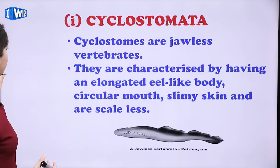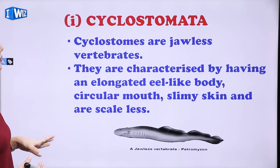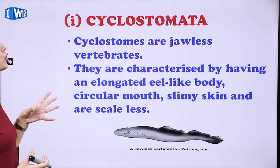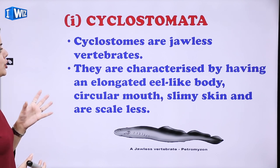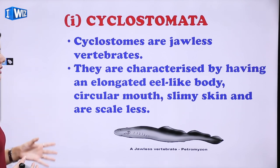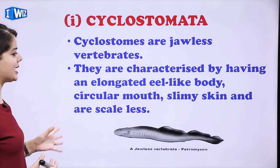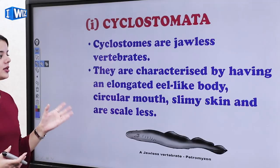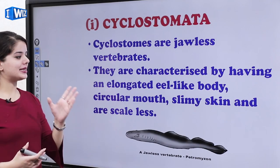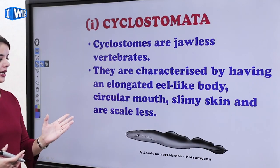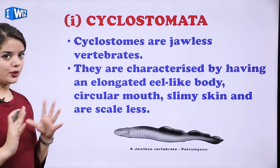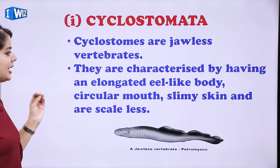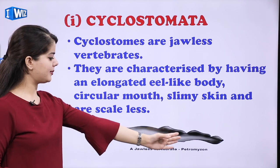Within Vertebrates, first comes Cyclostomata. Cyclostomes are jawless vertebrates characterized by having an elongated eel-like body, a circular mouth, slimy skin, and no scales in their body.